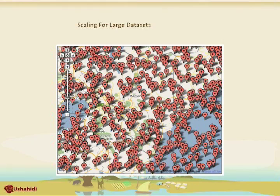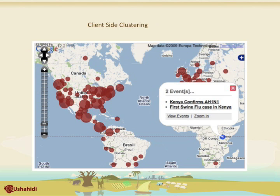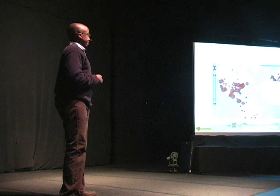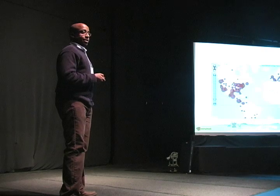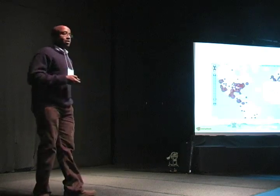The next challenge was how do you deal with large data sets, and this can quickly become a problem. We came up with client-side clustering of mapping data, which is easy for small data sets because you can do this on the client side. But we quickly realized this definitely won't be enough — we actually had a guy try to upload 2 million data points into a new Ushahidi instance, and that didn't go very well, clearly.